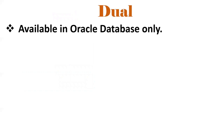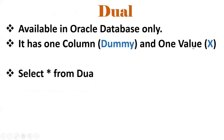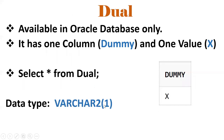The DUAL table is available in Oracle database only. It has one column — the name of the column is DUMMY and its value is X. So when I run SELECT * FROM DUAL, we get one row: column DUMMY with value X. The data type is VARCHAR2 and data size is 1.